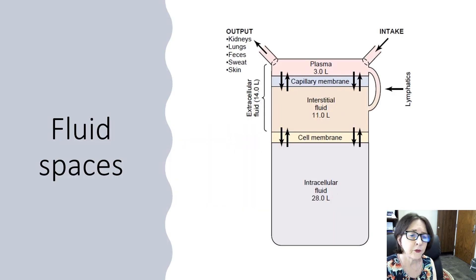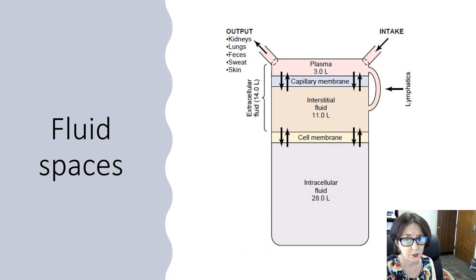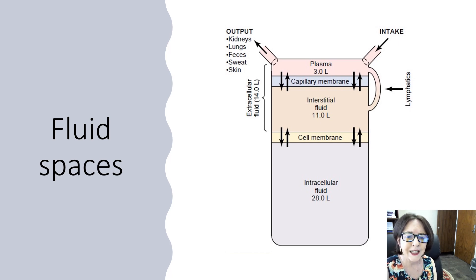Body water can move freely between the intra- and extracellular spaces through a semi-permeable membrane by osmosis. Osmosis is the movement of water — H2O — from an area of low solute concentration to an area of high solute concentration. Water wants to dilute solute until there is equilibrium across the membrane.